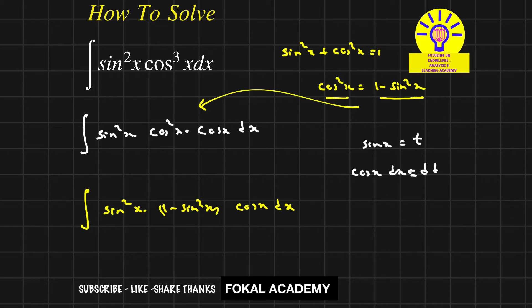Now substitute: integral of sin x means t, that is t² into (1 minus t²), and cos x dx is written as dt. Now expand these two terms, so the equation becomes integral of t² minus t⁴ dt.